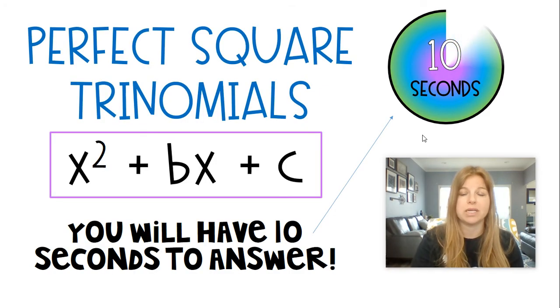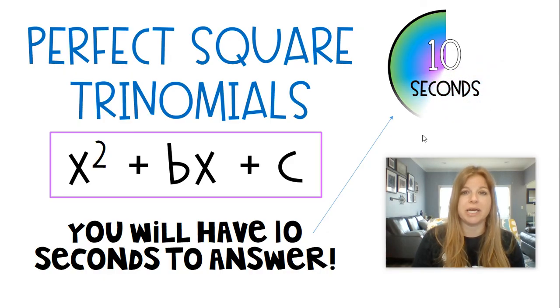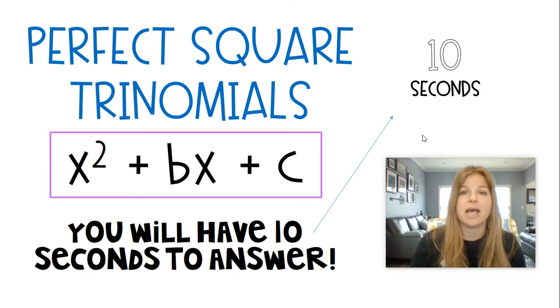Perfect square trinomials. So the perfect square trinomials are where we have this trinomial x squared plus bx plus c, and our c value is a perfect square. And the square root of c doubled gives me b. Okay, hopefully you remember your perfect square trinomials. If not, take a look at my perfect square trinomial video. Let's see if we can factor these.